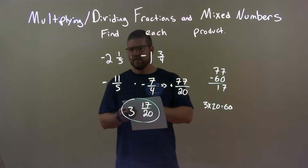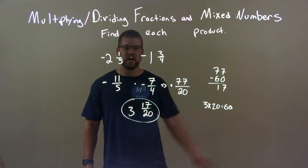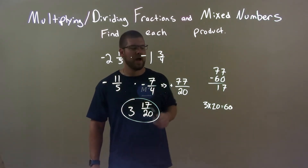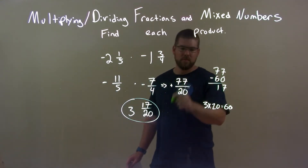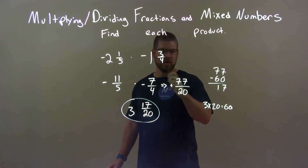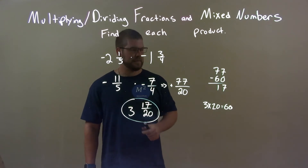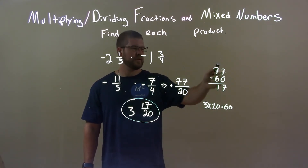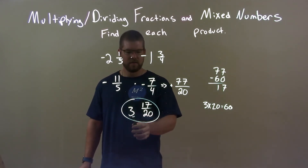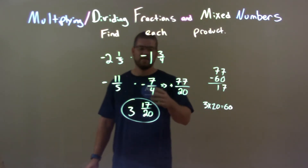Quick recap: we were given negative 2 and 1 fifth times negative 1 and 3 fourths. First, convert to an improper fraction, then multiply across the numerator and denominator. That gives an improper fraction of 77 over 20. We see that 20 goes into 77 three times — closest number is 60 — leaving 17 over 20. So the final answer is 3 and 17 over 20.